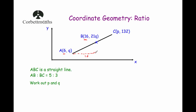We want the distance from B across to C. The ratio AB to BC is 5 to 3, so this horizontal distance corresponds to 5 parts. 10 divided by 5 is 2, so one part equals 2. The distance from B to C is 2 times 3, which is 6. So we go 6 across from B to find the x-coordinate of C. Starting at B with x = 16 and adding 6, we get P = 22.